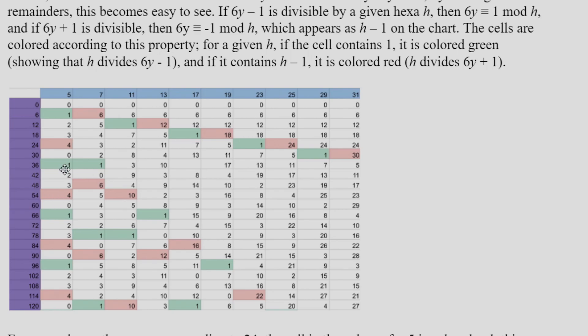And why is that? Well that indicates that one of the two hexas adjacent to that anchor is divisible by that hexa. So for example, 36 is congruent to 1 mod 5, which means that 36 minus 1 is divisible by 5 because it's congruent to 0. And that of course is 35 in this example.